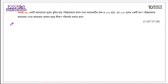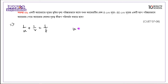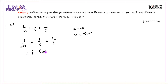So using 1 over u plus 1 over v equals 1 over f: when the camera is focused on a very distant object, we take u equals infinity. So 1 over infinity plus 1 over 8 equals 1 over f. This tells us the focal length of the camera lens is 8 centimeters.